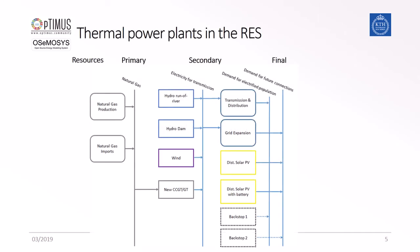Looking at the reference energy system, we have the primary supply which has been covered in previous modules, which supplies fuels to the secondary energy supply, which this and the next coming modules will cover. We can see that in the secondary energy supply we have a combined cycle gas turbine, which is a thermal power plant. The primary energy supply comes from two sources: domestic natural gas production and natural gas imports, both supplying natural gas to the combined cycle gas turbine.